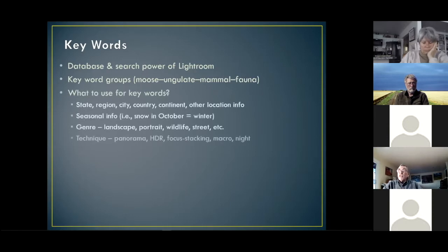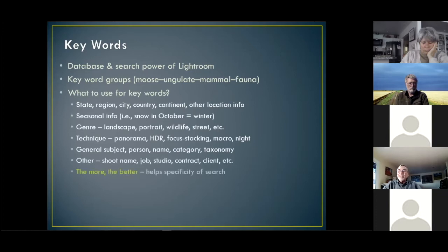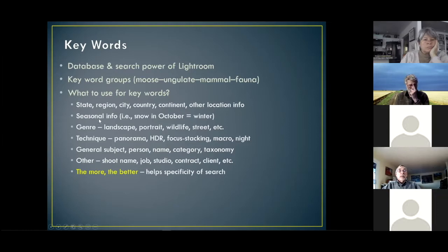People constantly ask: what should you use for keywords? It depends entirely on your style of photography. Generally, keywords need to tell you something about where an image was taken. They need to tell you something about when — I put seasonal information in, for example, knowing that October is traditionally fall, but if there's snow on the ground in Jackson it gets called winter, even if it's May. That way if someone needs a picture of an animal in the snow, I can pull up 'winter.'